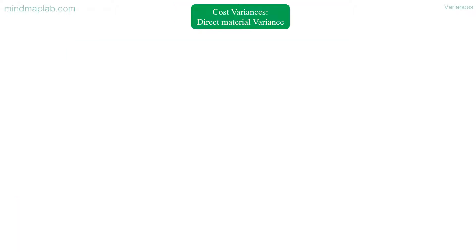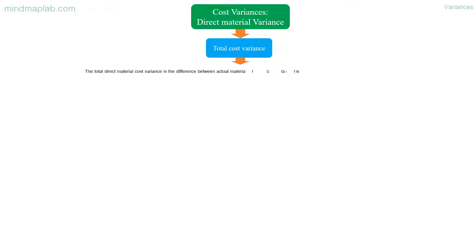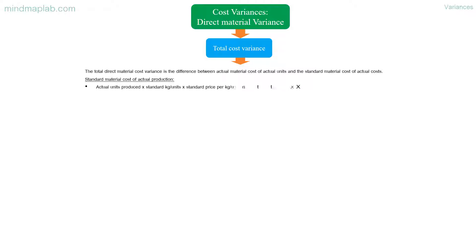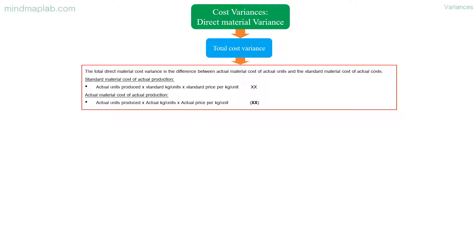Direct material variance — total cost variance. The total direct material cost variance is the difference between the actual material cost of actual units and the standard material cost of actual production. Standard material cost of actual production equals actual units produced multiplied by standard kg/units multiplied by standard price per kg or unit. Actual material cost of actual production equals actual units produced multiplied by actual kg/units multiplied by actual price per kg or unit.